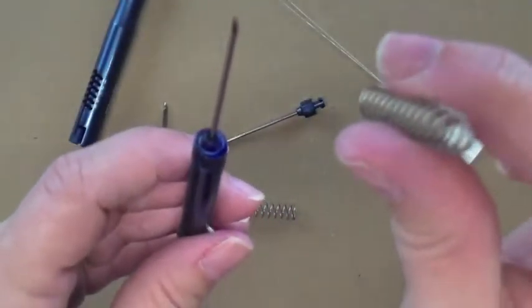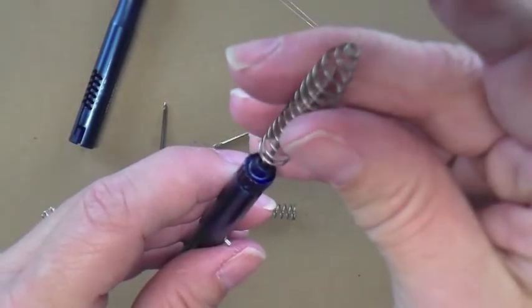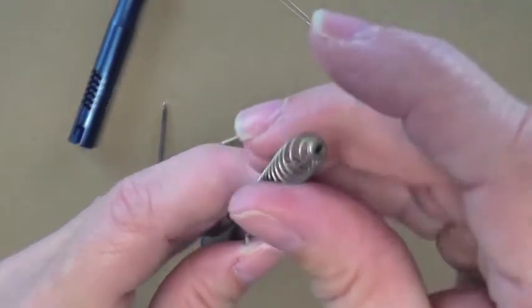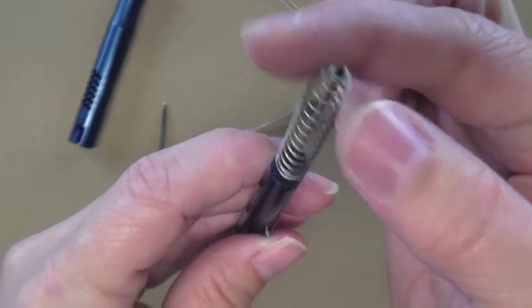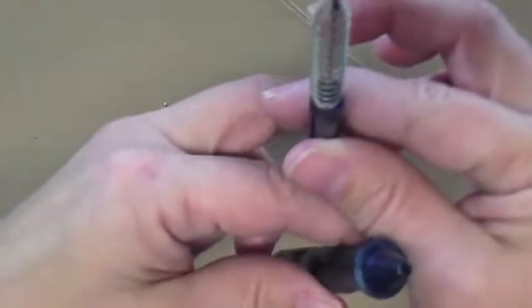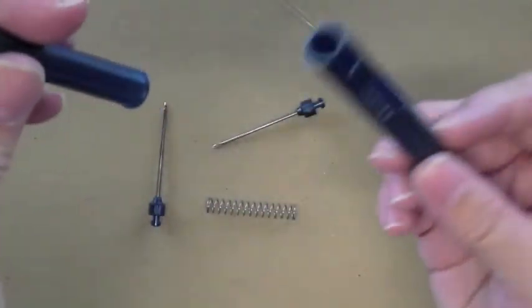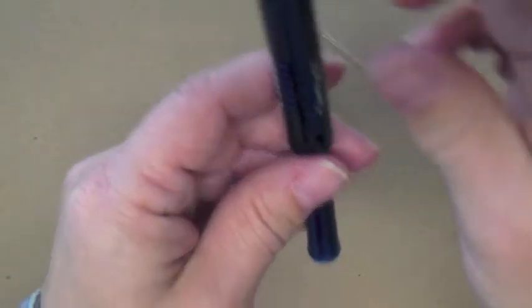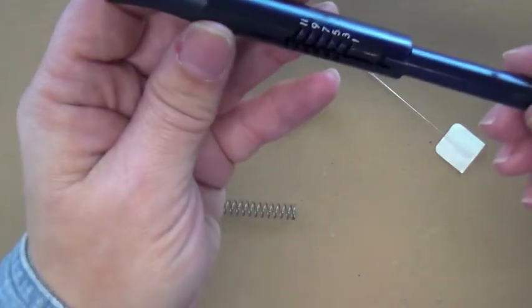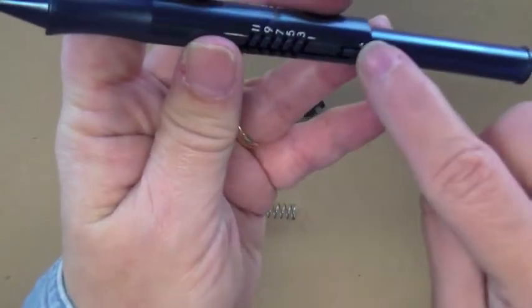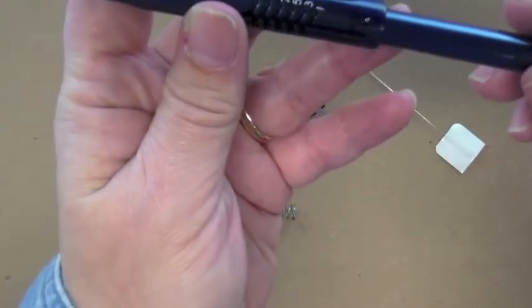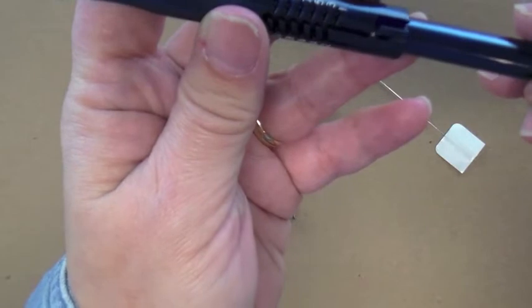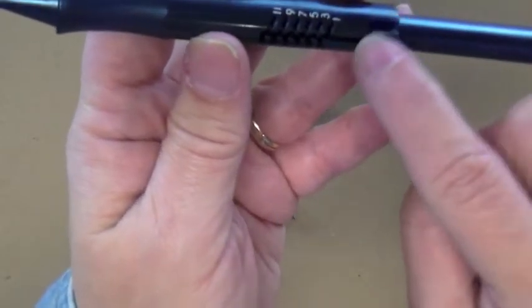And then you need to take the spring and slide it over, making sure that the needle tip comes through the very end of the spring. And then you're going to slide the outer tube over and again, line up that little silver piece with the shaft and bring it in.